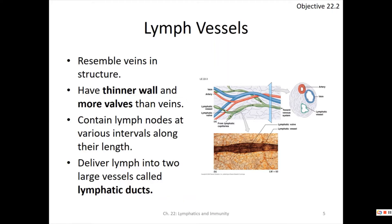Lymphatic vessels are a lot like a vein superficially, but they have much thinner walls and more valves because they're very low pressure. There are unique structures to them. Lymph nodes are located along lymphatic vessels at various intervals — you might find a bunch in the armpit, fewer down the arm, then a large cluster in the neck. They tend to cluster up at various places.